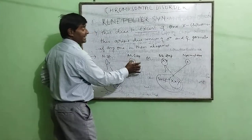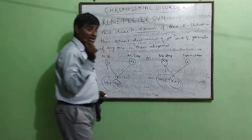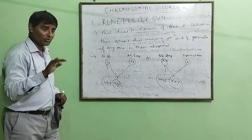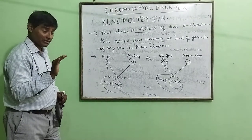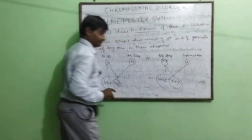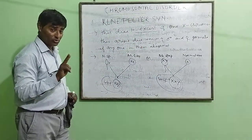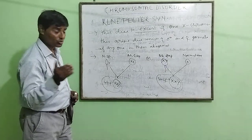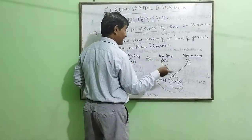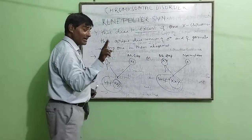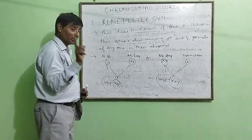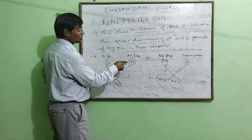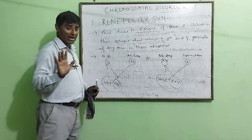During normal meiosis, chromosome number reduces to half, so one chromosome goes to one egg. But if there is an abnormal egg, separation of chromosomes during meiosis does not take place — due to non-disjunction at the pachytene stage — and this abnormal egg is formed.